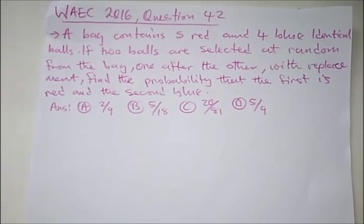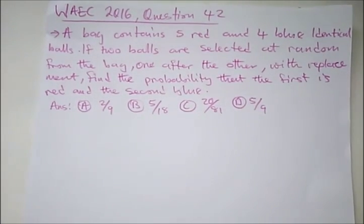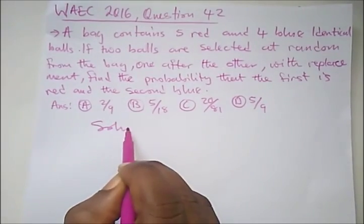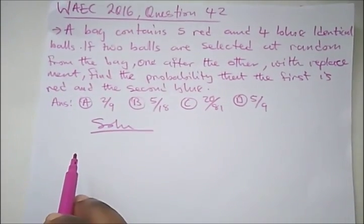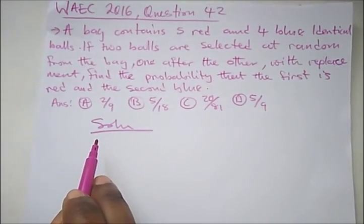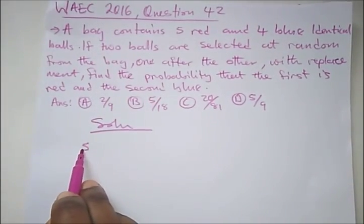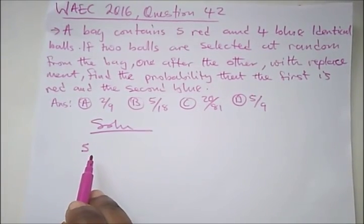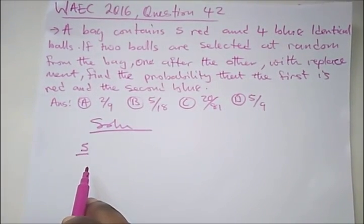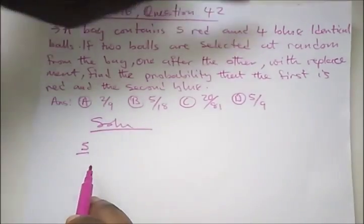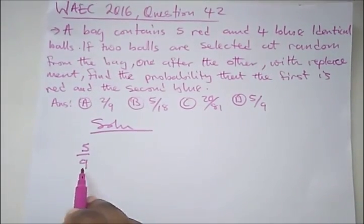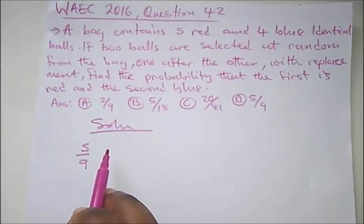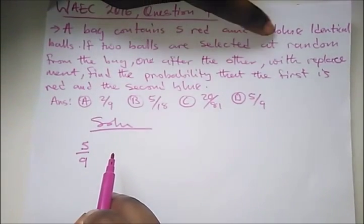So if you remember our laws of probability, when we have an and, we perform multiplication. So solution here. What's the probability that it would be a red ball first? So we have 5. What's the 5? That's the number of required outcomes. And what's our total? Total balls is 9 divided by 9.